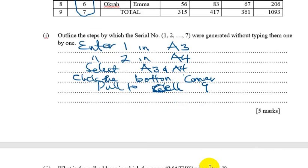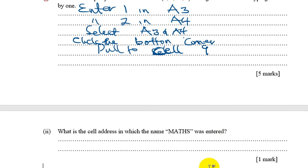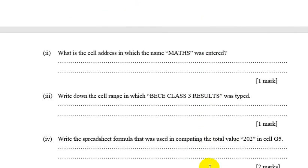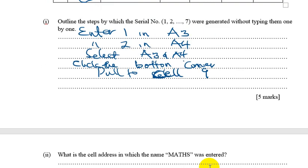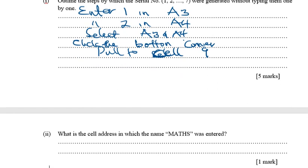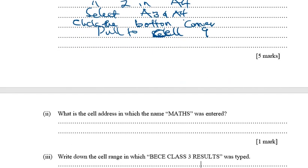Part (b) asks: what is the cell address in which 'Mass' is entered? Looking at the table, Mass is entered in cell D2 — D is the column and 2 is the row. So you simply write D2.